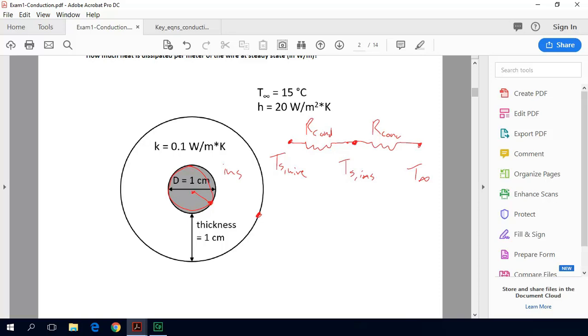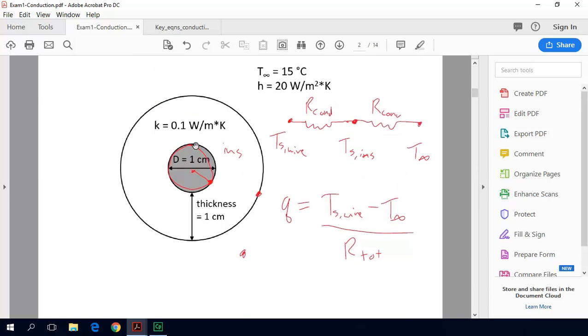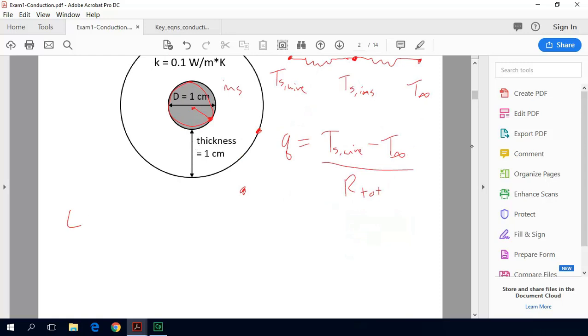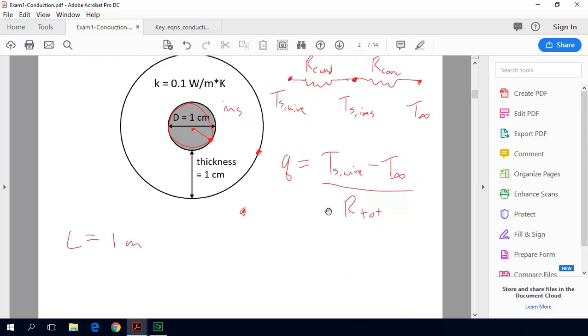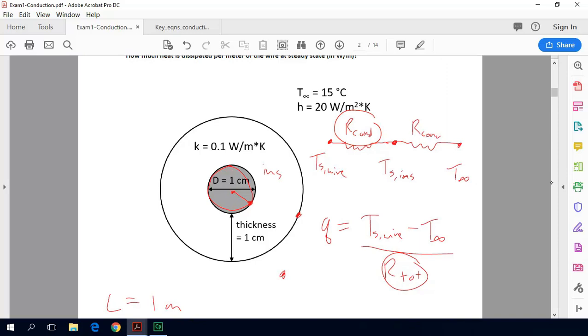So the equation that we would want to use would be that Q is equal to our two extreme temperatures - this temperature and ambient - so we're going to go T_S wire minus T infinity divided by our total thermal resistance. We are asked to find the heat loss per meter so we can just say this thing is one meter long so L equals one meter. Now we need to go back and quantify our total thermal resistance which will require quantifying our conductive thermal resistance and our convective thermal resistance.